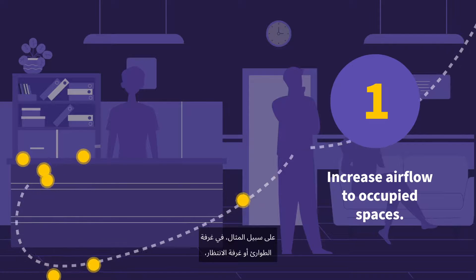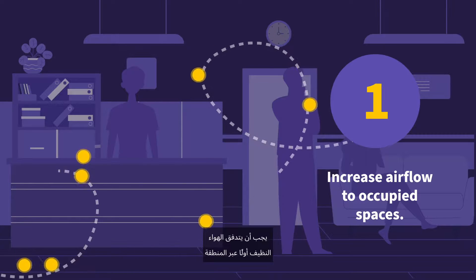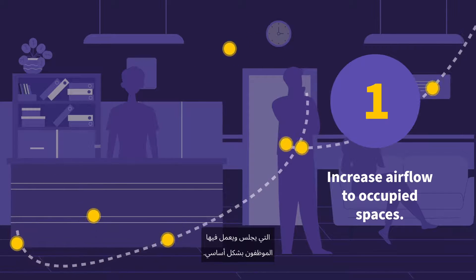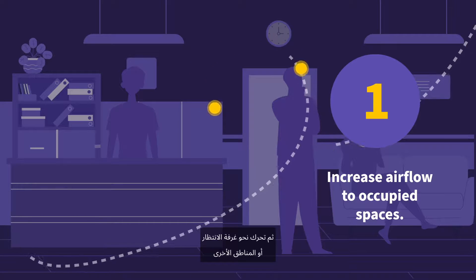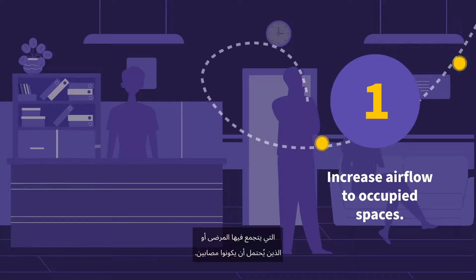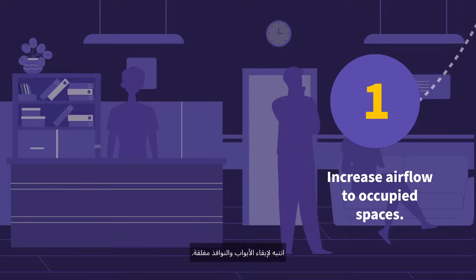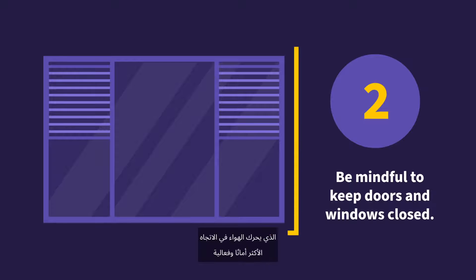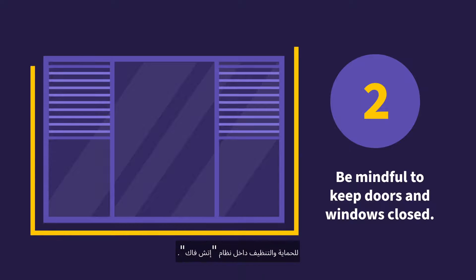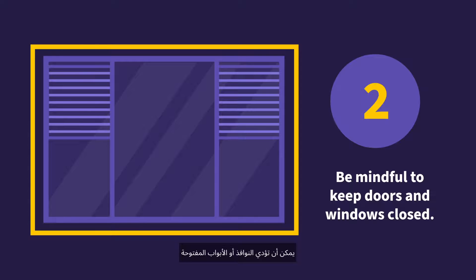Increase airflow to occupied spaces when possible and direct clean airflow to contaminated zones. For example, in an ER or waiting room, clean air should first flow through the area where employees primarily sit and work, then move toward the waiting room or other areas where sick or potentially infected patients gather. Be mindful to keep doors and windows closed. Medical buildings are designed to allow for pressurization that moves air in the safest, most effective direction for protection and cleaning within an HVAC system. Open windows or doors can throw the entire system off balance and make it ineffective.